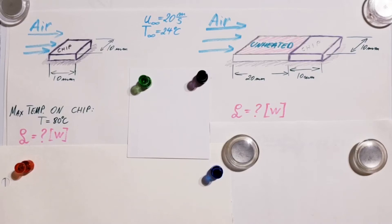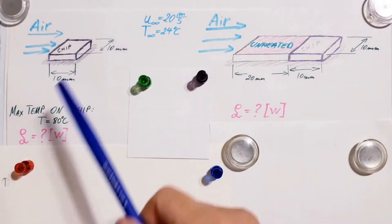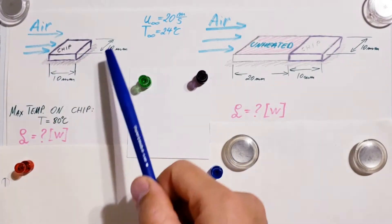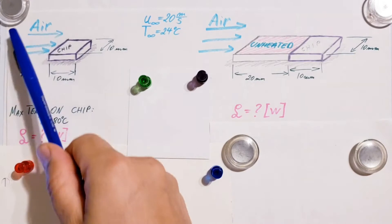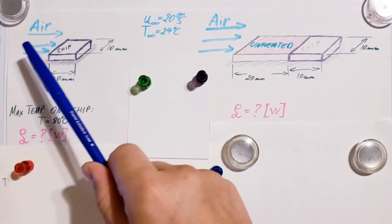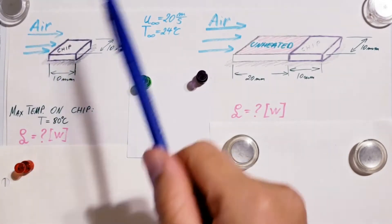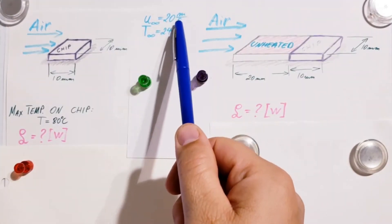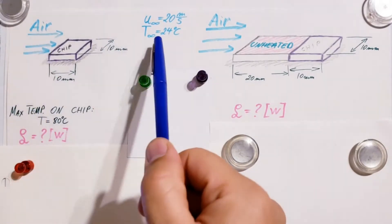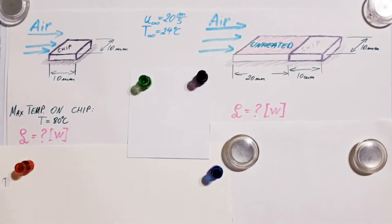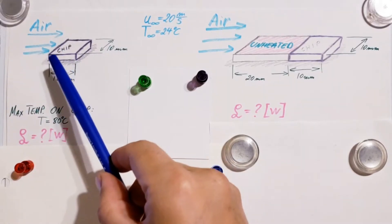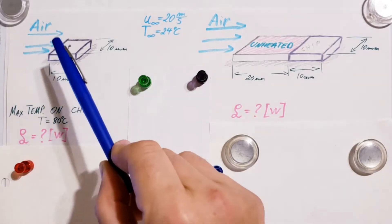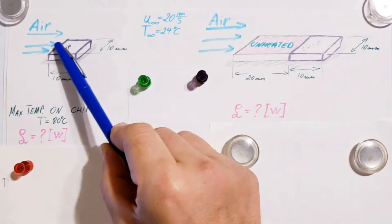This is a heat transfer problem working with a silicon chip. The surface area is 10 millimeters by 10 millimeters. On one side it's insulated and on the other it's cooled by an airflow parallel to the chip. The velocity of the air is 20 meters per second and the temperature of the air is 24 degrees Celsius. When the chip is in use, there is an electrical power dissipation within the chip that maintains a uniform heat flux at the cooled surface.